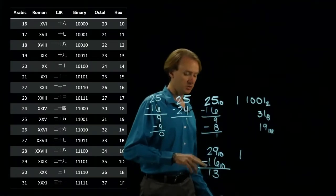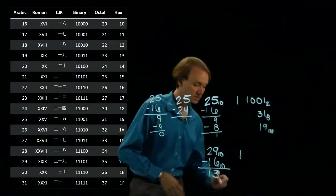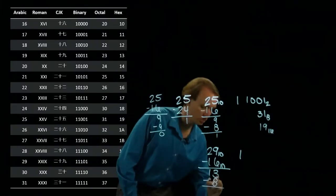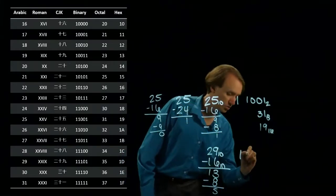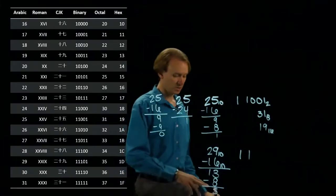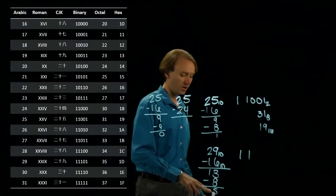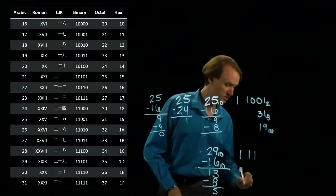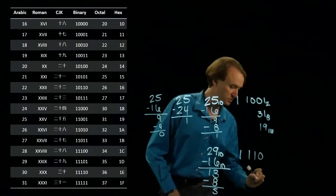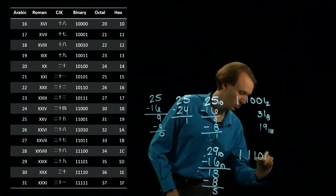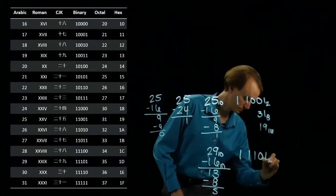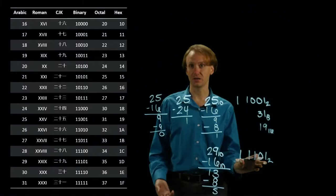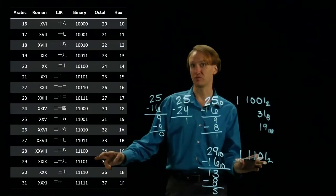Now, the next exponent down from 16 is 8. So I'll subtract 8. This will leave me with 5. And I'll put a 1 in the 8 position. Now, I know I can pull a 4 and a 1 out of here. So I'll put a 1 in the 4's position, a 0 in the 2's position, and a 1 in the 1's position. And this is the binary number that I get for 29, which matches up with what we've got here.